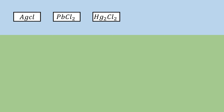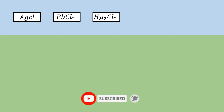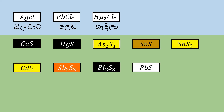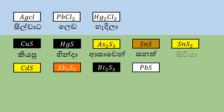Now we have the first lesson in the guide. 1. Palvinika is called Silwata, Lid, Head. 2. Palvinika is called Kiyapu Hinda, Asa-Sanath, Sitiya, Kaday Saban, Bil, Lid, Head.